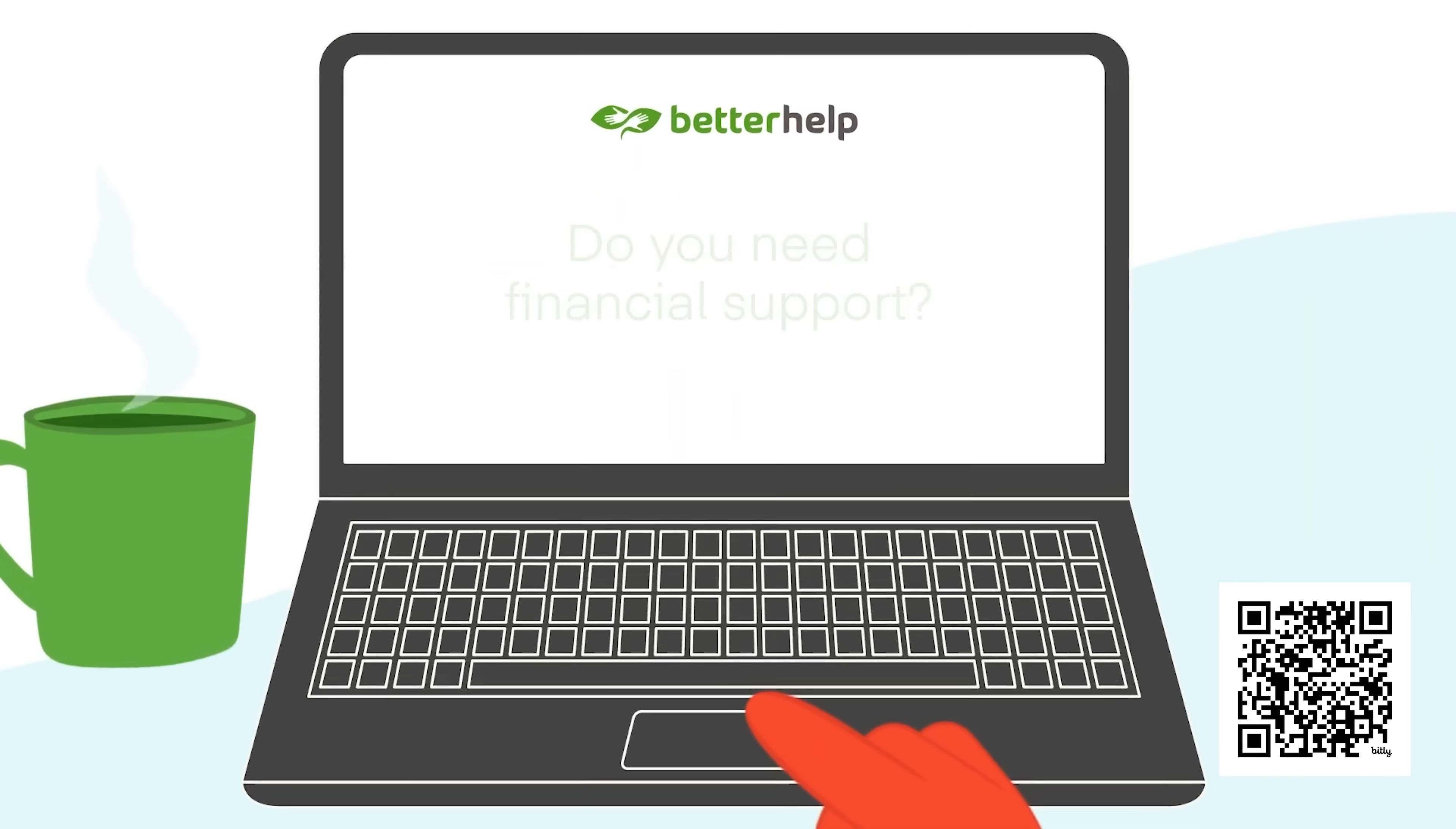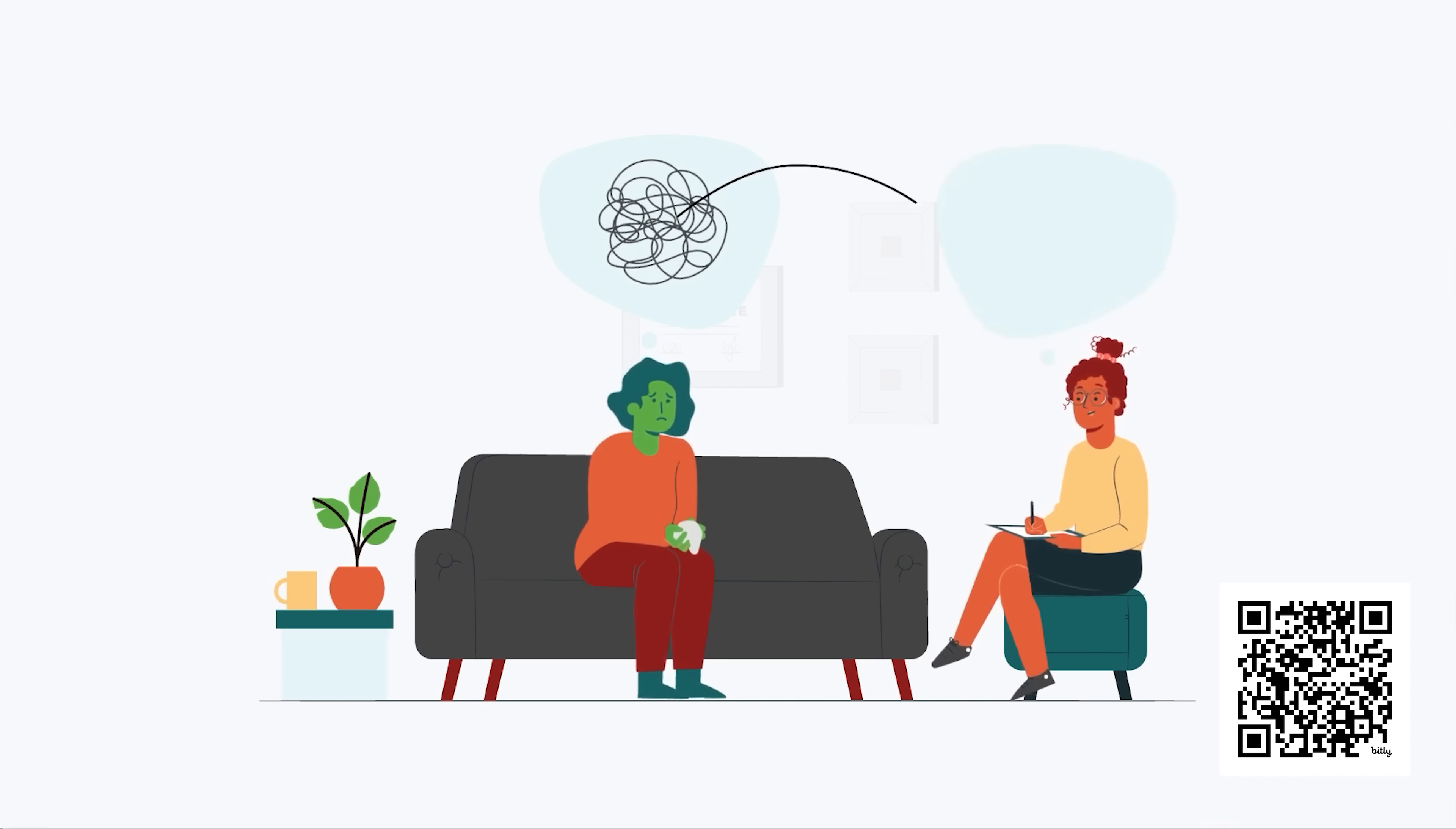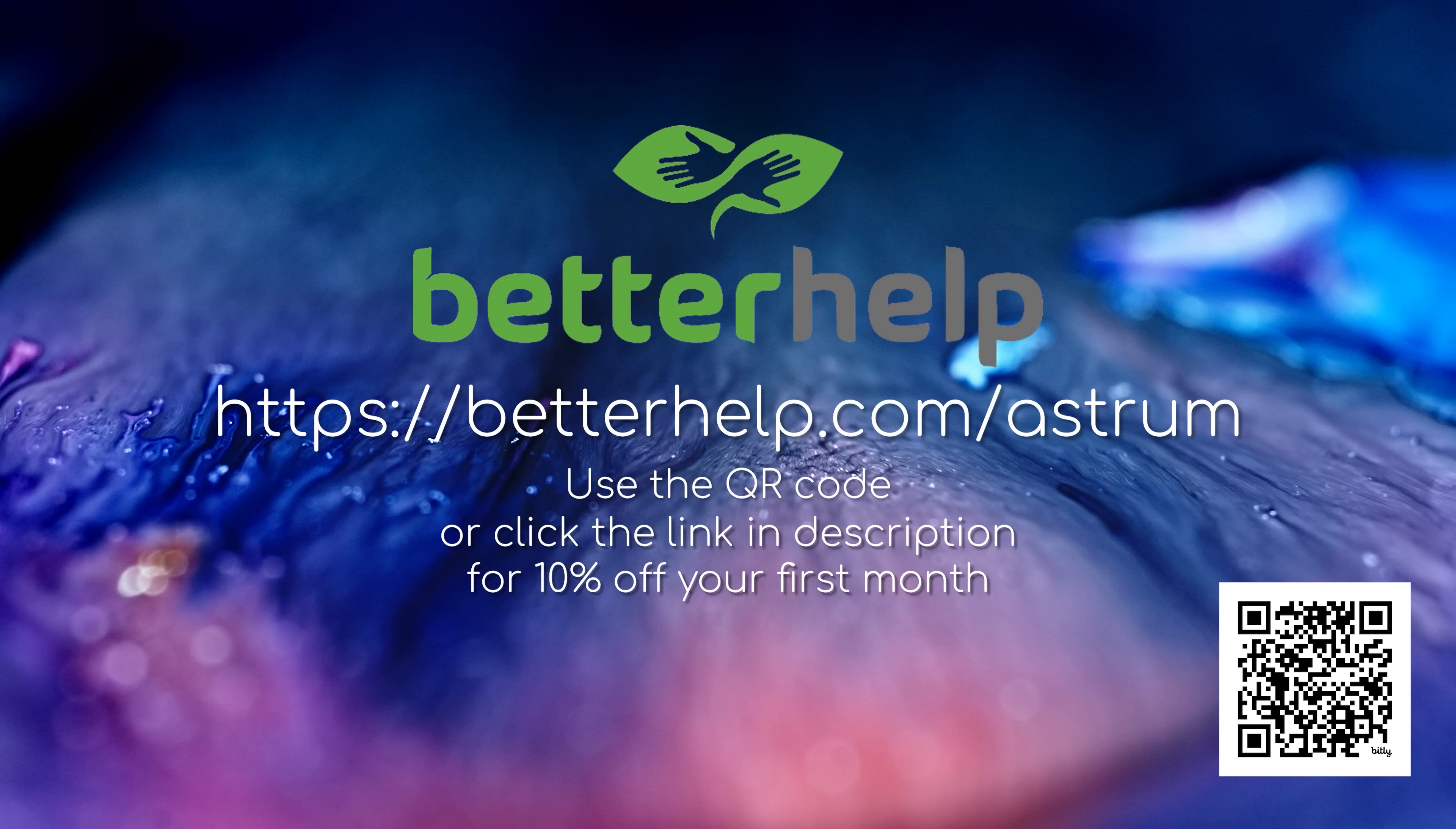When you start using BetterHelp, you fill in a questionnaire that assesses your needs, and then you are matched to a therapist within 48 hours in most cases. It's all online, so you can text or call, as well as video chat, and it fits very well around your schedule. And if you find yourself not clicking with your therapist, you can easily try another at no additional cost. So, if you think therapy might benefit you, why not scan my QR code or follow the link BetterHelp.com/Astrum in the description below. Using my links get you 10% off your first month, so go on, give it a try.